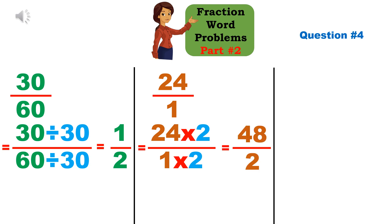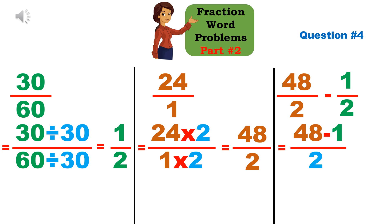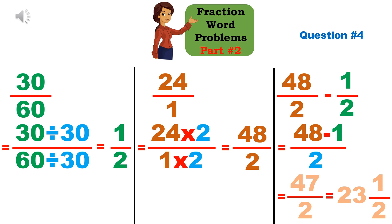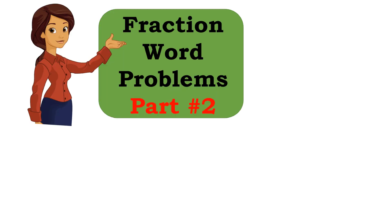We need to find how many hours Bob does not ride his horse, so it's 48/2 minus 1/2. Since the denominators are the same, that's 48 minus 1 over 2, which gives 47/2. That simplifies to 23 and 1/2. So Bob does not ride his horse for 23 and a half hours of the day.